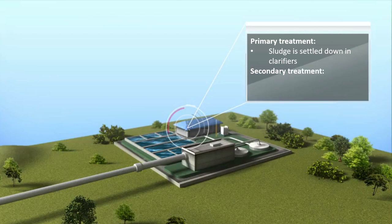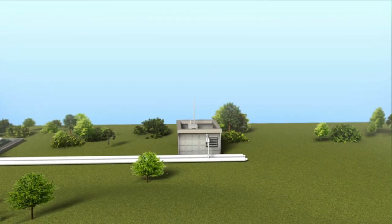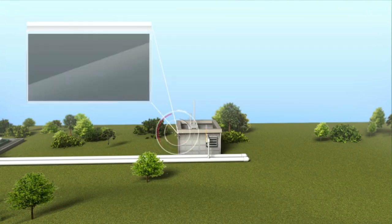Non-settlable solids such as dissolved sugars are still left in the wastewater after primary treatment. Secondary treatment uses microorganisms and oxygen to convert dissolved solids into biological masses which can be removed later. Depending on the local permits, the nutrients after this stage might not be a concern for release into natural waterways or groundwater.